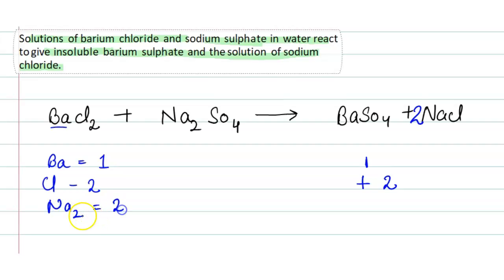Na is 2 in the products as well. Now SO4 is 1 on both sides.